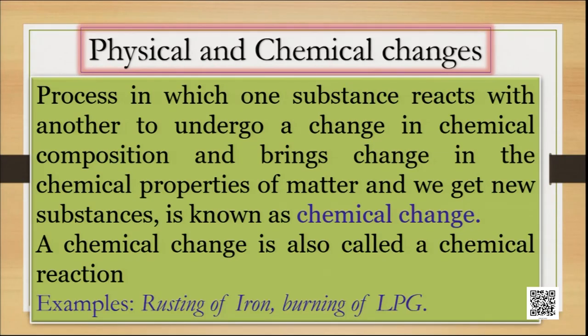What do we observe in case of physical change? Only the state or some physical properties are changing. But in chemical change, what do we observe? In a chemical change, the properties of the substance itself change. That means, in case of a chemical change, we obtain a new chemical substance having altogether different properties. This process in which one substance undergoes a change in chemical composition and brings change in the chemical properties of matter, and we get a new substance, is known as a chemical change.